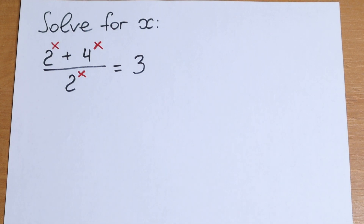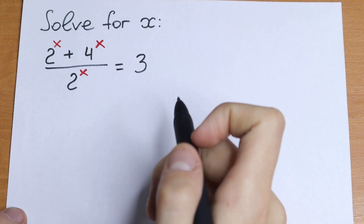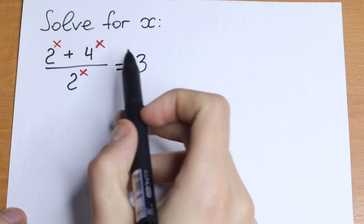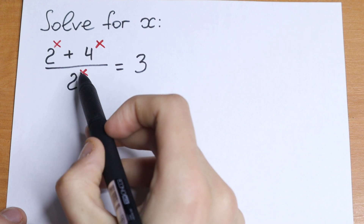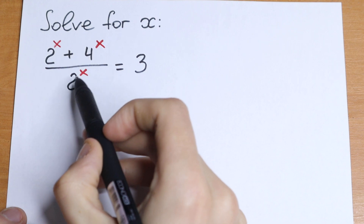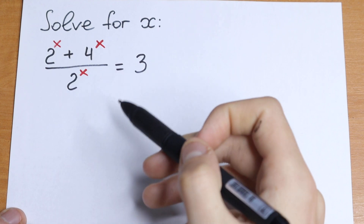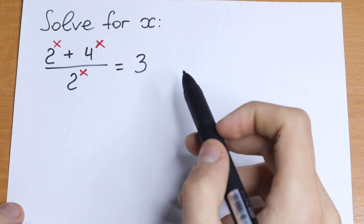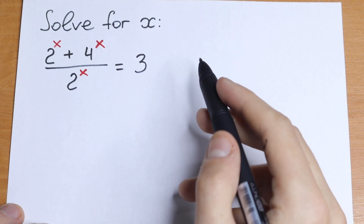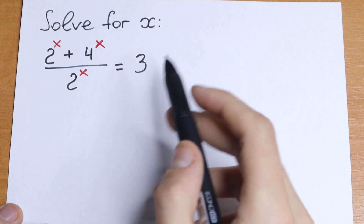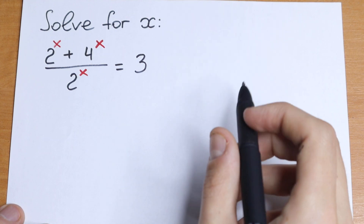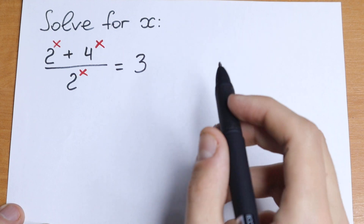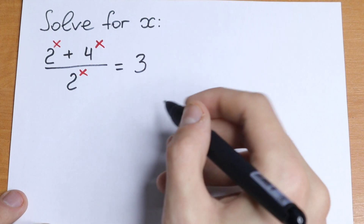Hello everyone, welcome back to MathMood. Today we have an interesting exponential equation: 2 to the power x plus 4 to the power x, all over 2 to the power x, equal to 3. How can I solve this equation? I want to show you two methods how to solve it real quick and easily. Take a look.